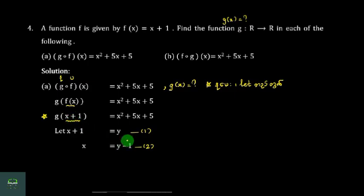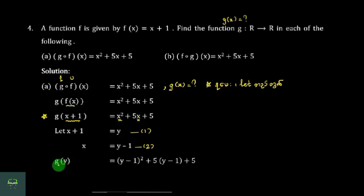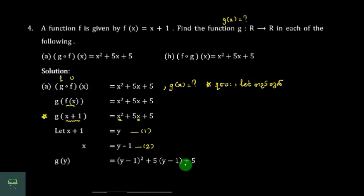Here we will see y equals 2. We are going to see y equals 2. y minus 1, double square, plus 5 into y minus 1, plus 5, equals y equals 2.